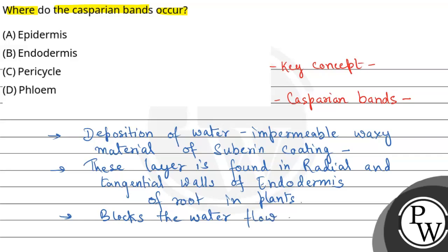So, the question was asked: where do the Casparian bands occur? The correct answer here is option B — it occurs in the endodermis of roots in vascular plants. I hope you understood it well. Best of luck!